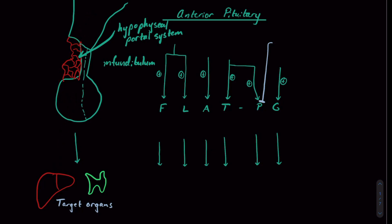So it's sort of this cascade: the hypothalamus releases a hormone, which stimulates the release of another hormone from the anterior pituitary, which stimulates the release of hormones from the target organs.